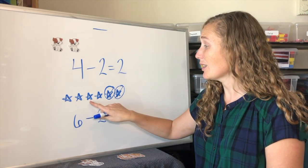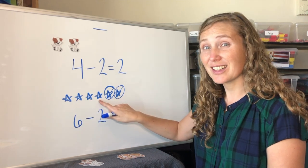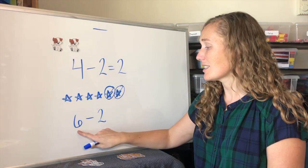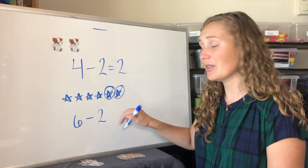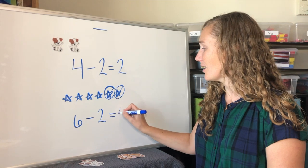One, two, three, four. Four stars. Six minus two equals four.